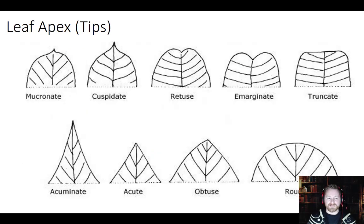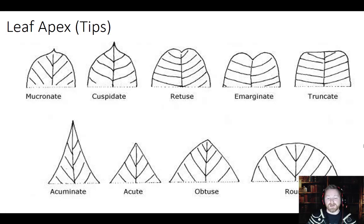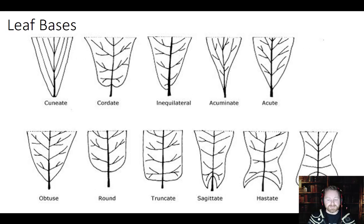Same thing with the leaf tips — it can be really difficult to tell retuse from emarginate when looking at the actual leaf itself. The same thing with mucronate and cuspidate; when looking at a real leaf there will be a blending. Same with acute and acuminate and obtuse and round — it could be difficult to tell at times. We do a whole lab where students pick leaves, identify them, make drawings, and identify the tips, bases, and margins. Students ask me, 'Is this obtuse or acute?' and sometimes I say it could really be either — just take your best guess. Same thing with the bases — there are tons of types, just be familiar with a few of them.